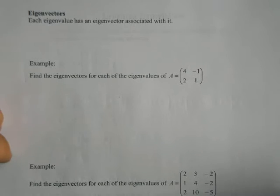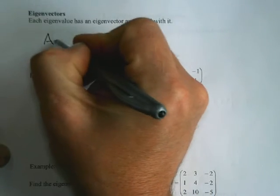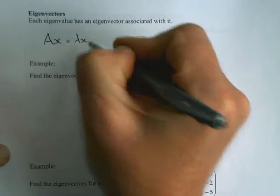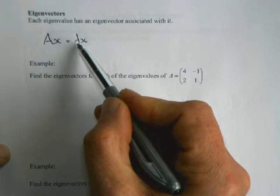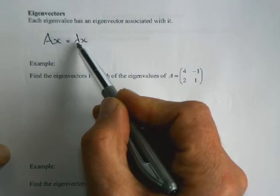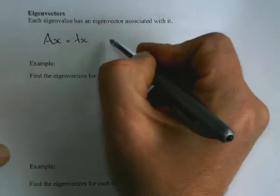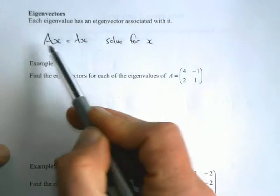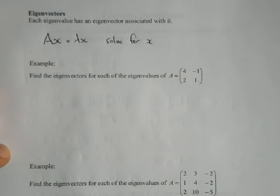Now that we've figured out how to find the eigenvalues, it's time to turn our attention to the eigenvectors. Remember from the original definition that A times x had to equal lambda times x. So each of the eigenvalues is a value for lambda. We've been given A at the start, so all we have to do now is solve this for x. To find the eigenvector, we just take our matrix A, our eigenvalue lambda, and solve for x.